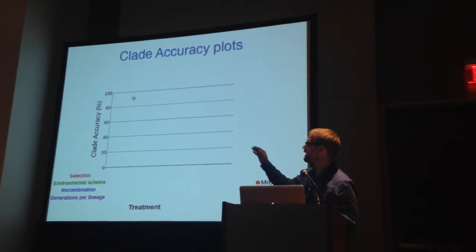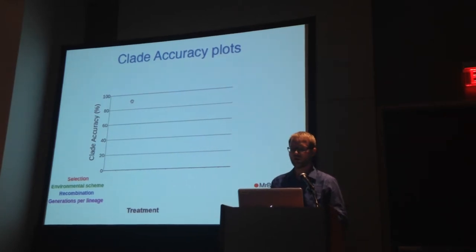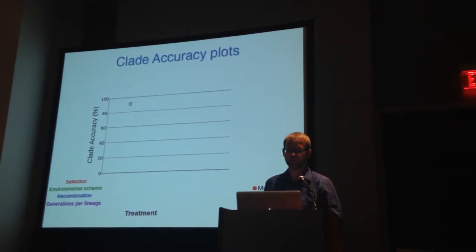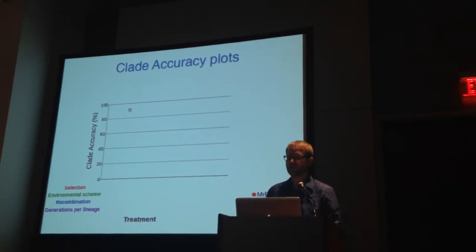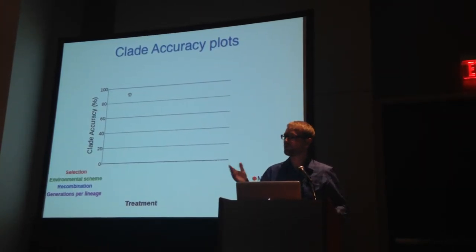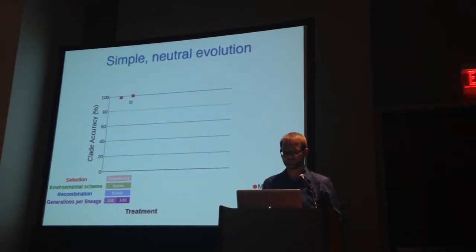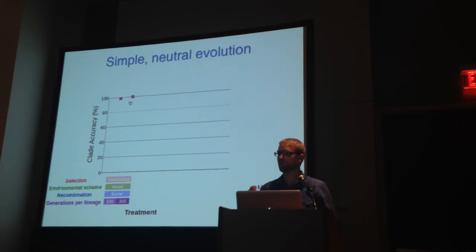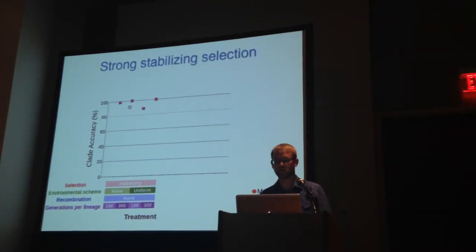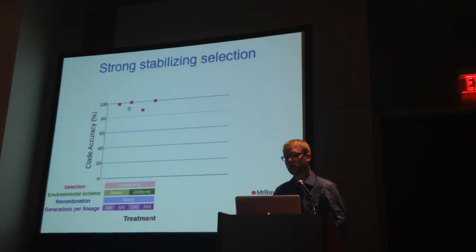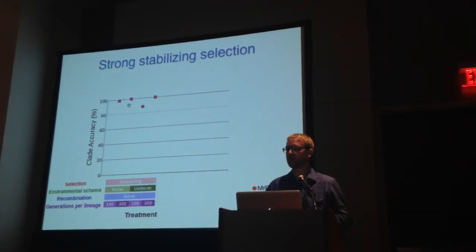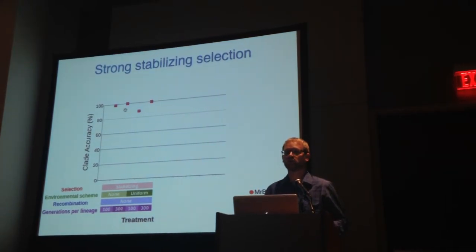Here's the data presentation: clade accuracy on the y-axis ranging from 0 to 100%, and different treatment conditions across the x-axis broken into columns. Generally the data points for RAxML and MrBayes almost always overlap. For simple and neutral evolution — actually very weak stabilizing selection — both methods do very, very well. For strong and very strong stabilizing selection, we see that for a limited extent of evolution on the tree, we're not able to infer one of the six clades correctly. If you recall the Hillis et al. study, that's exactly what they found too — we just don't have that many variable informative sites.